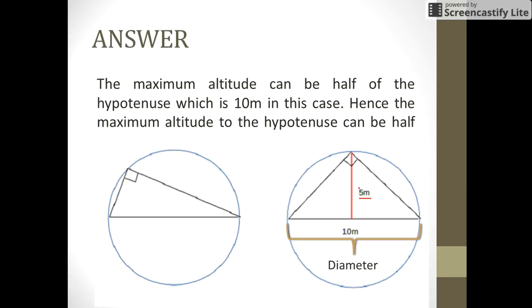Let us see how this comes out to be 5. We all know that the angle in a semicircle is 90 degrees, and this would be the altitude that is drawn to the hypotenuse. We need to find what can be the maximum value of the altitude h.